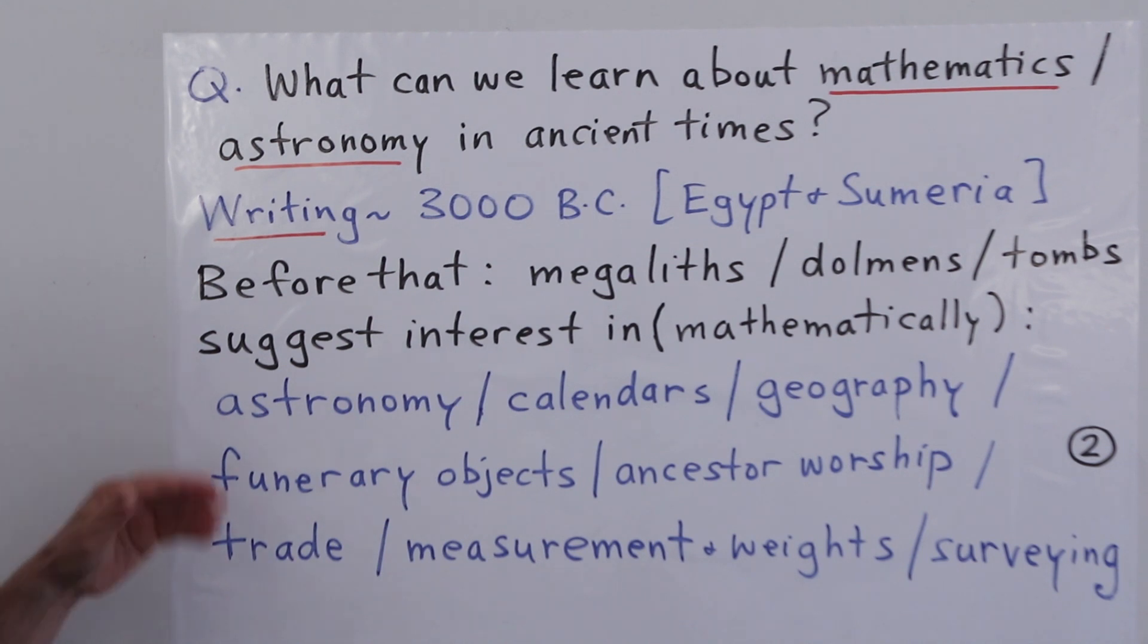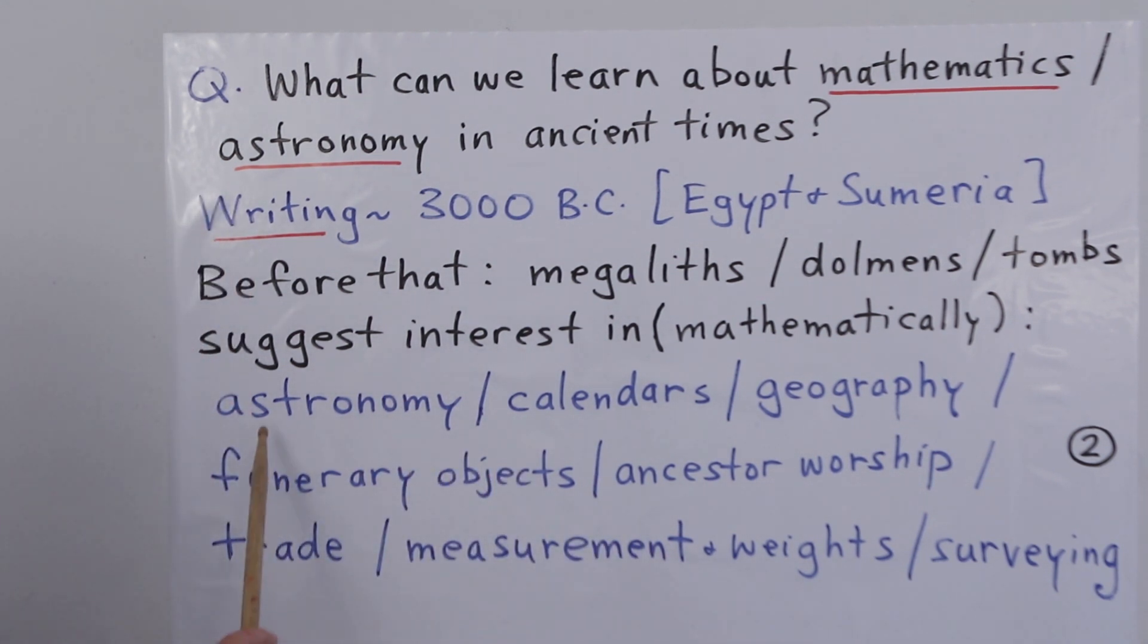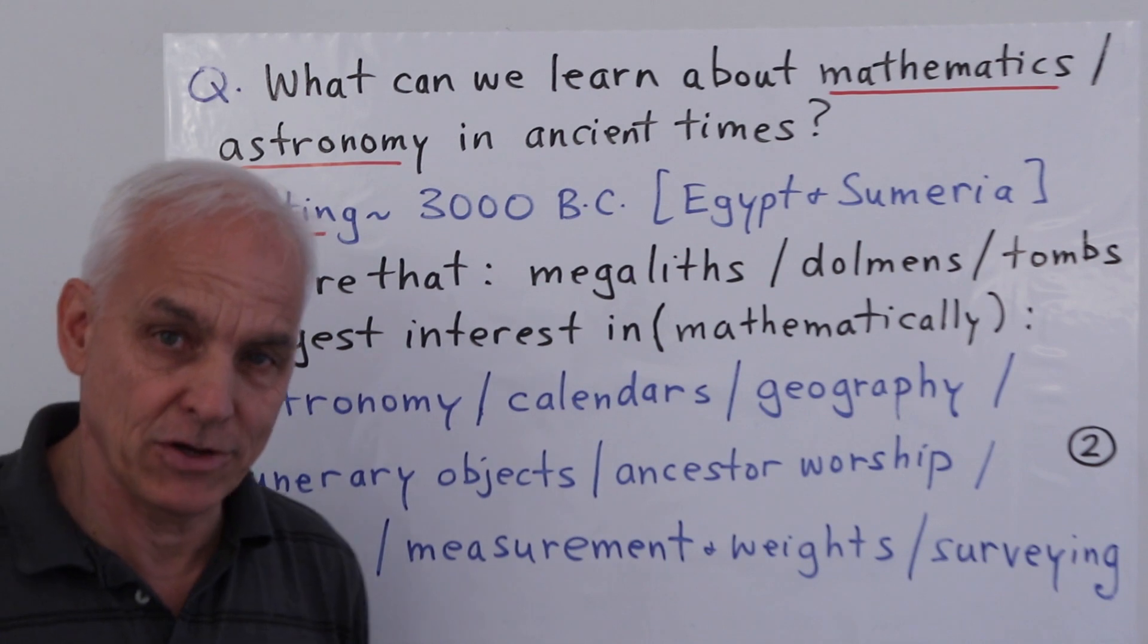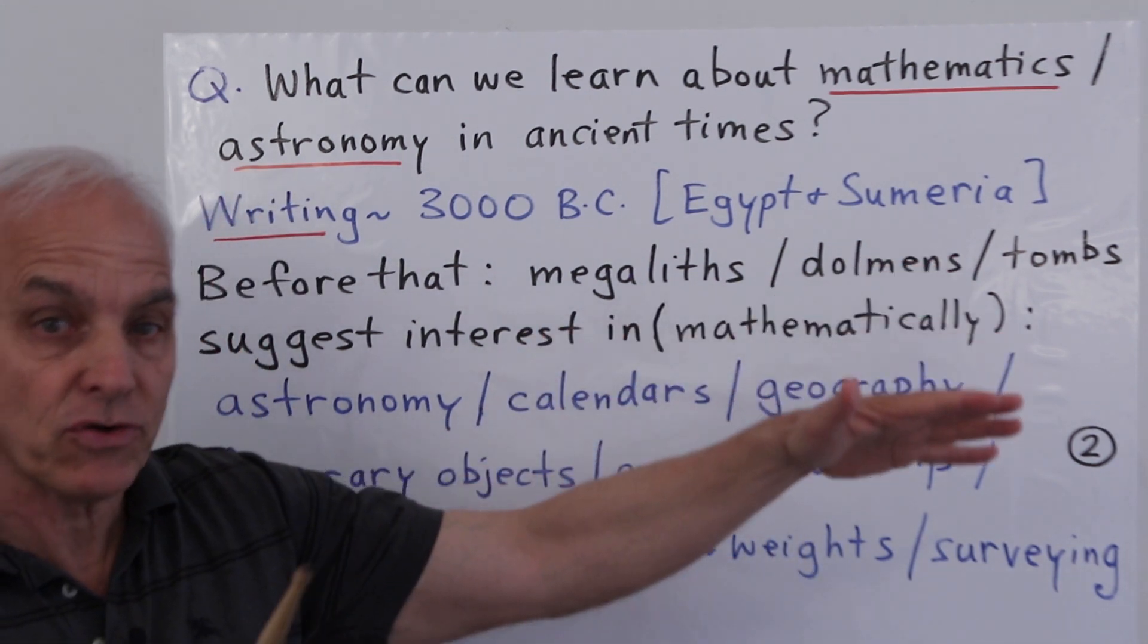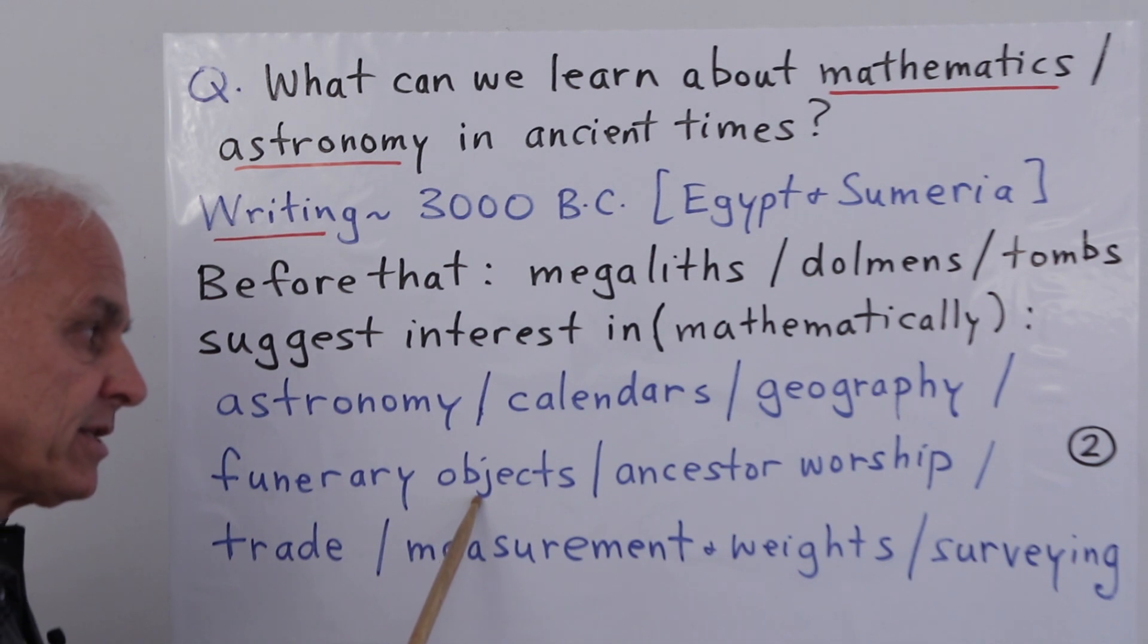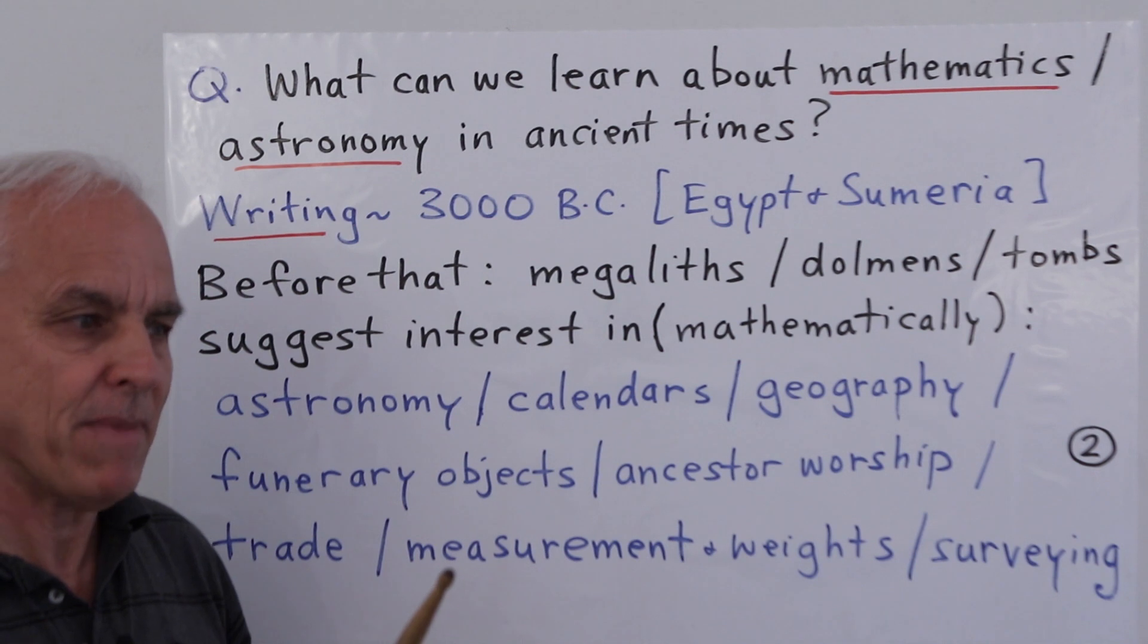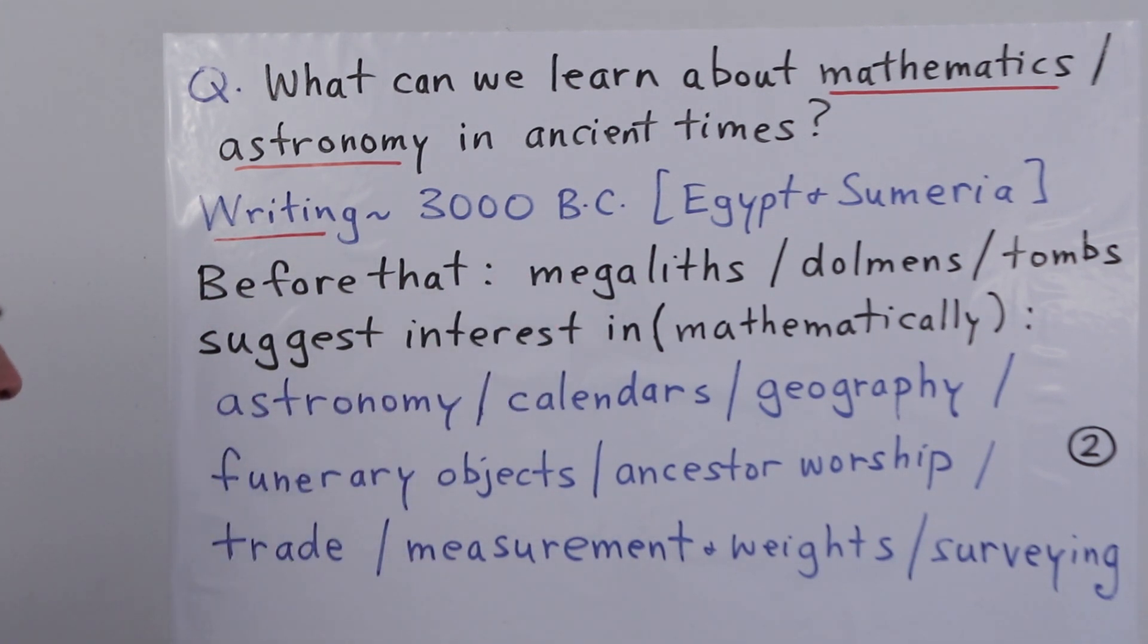Mathematically, objects or topics of interest would probably have included astronomy - studying the heavens and what's going on up there. There would have been an interest in calendars and timekeeping, in geography, in understanding the structure of the world in the nearby region and maybe even a little bit broader. Funerary objects, ancestor worship - these are things that perhaps have a mathematical manifestation, at least suggested by some of the megaliths that we have around.